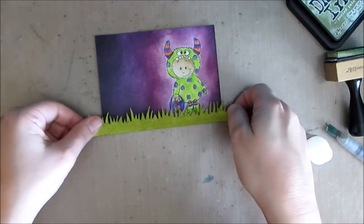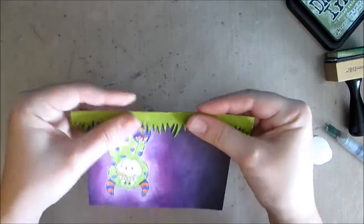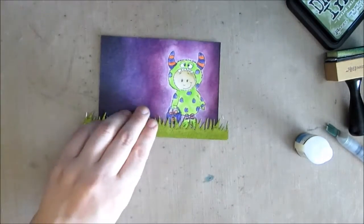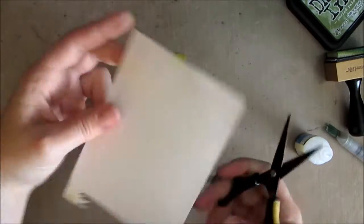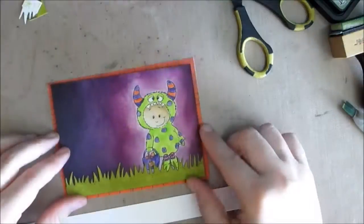Matte accents and also glossy accents from Ranger are really strong adhesives and work well for thick materials like this watercolor paper. So I'm just kind of centering it on the way I like it and trimming off the edges and then I'm ready to finish off the card now that I have the main part done.